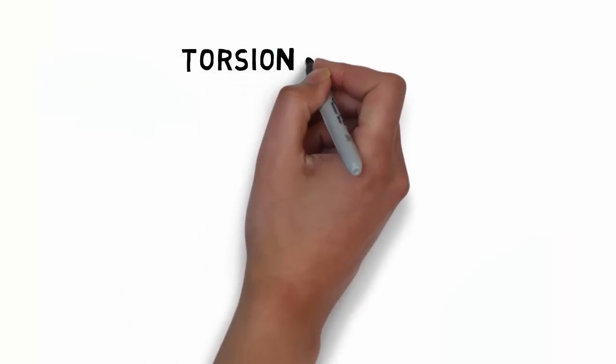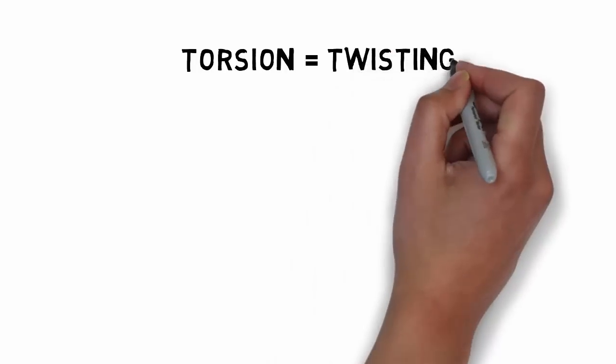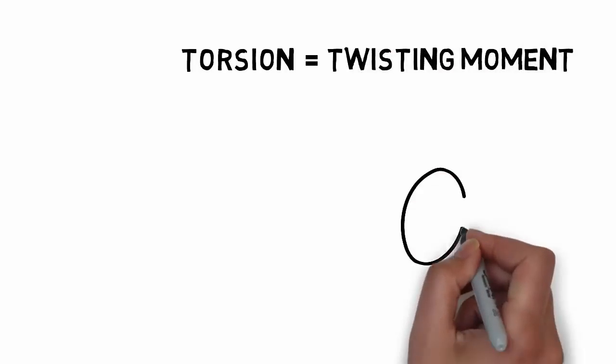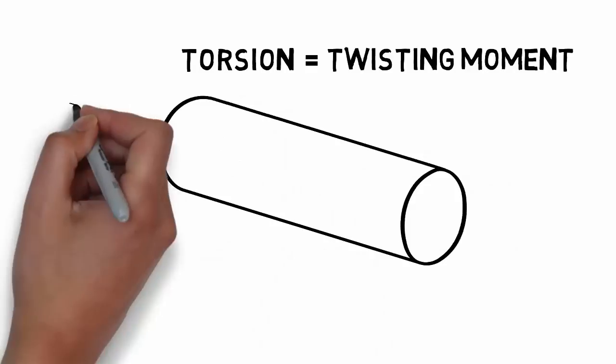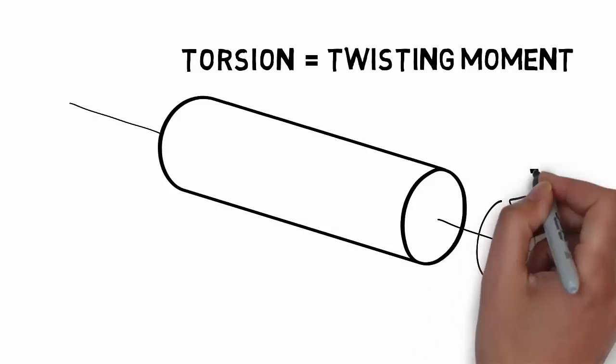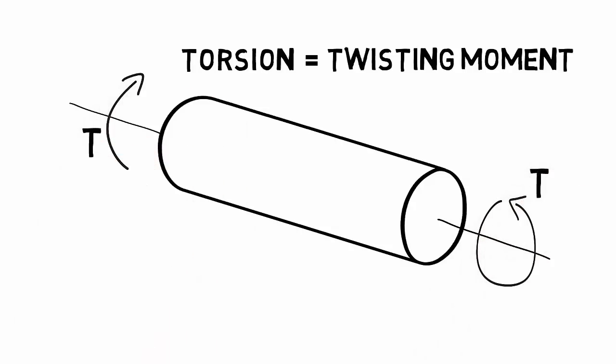Let's return for a moment to our definition of torsion as a twisting moment applied along the axis of a shaft. To annotate torsional loading on a given shaft, we can first draw its axis, and then the pair of twisting moments that react each other along that axis.